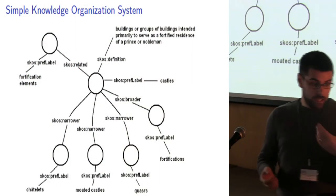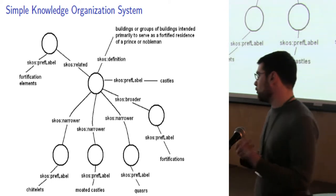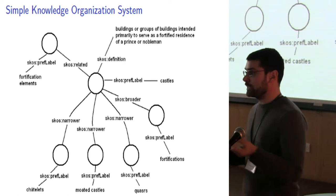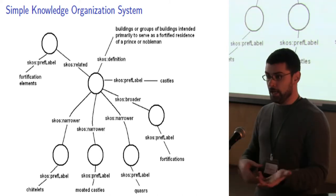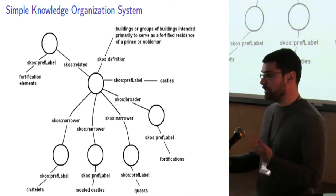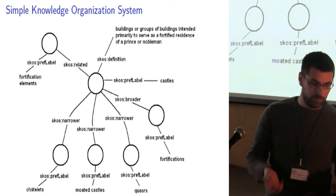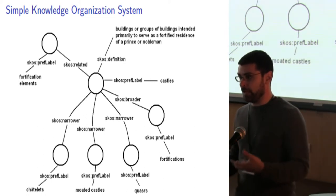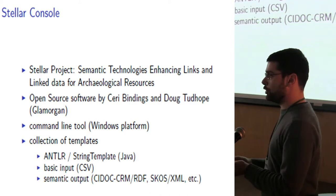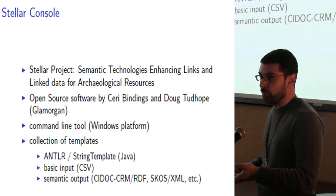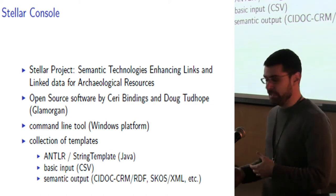SKOS stands for Simple Knowledge Organization System, and is the W3C standard for thesauri. The ontology of SKOS is rather simple. There are concepts; concepts have labels — names that you use to define them. Then to create the hierarchy of concepts, there are two properties: narrower and broader. So one concept can be broader or narrower than another one, and then it can also be related to another concept. So like in this case, you have 'fortifications' to be a broader concept of a thesaurus entry, and so on. The background of the use case was to show that one can use already existing open-source software, doing a small bit of implementation, to transform legacy data to this other format.